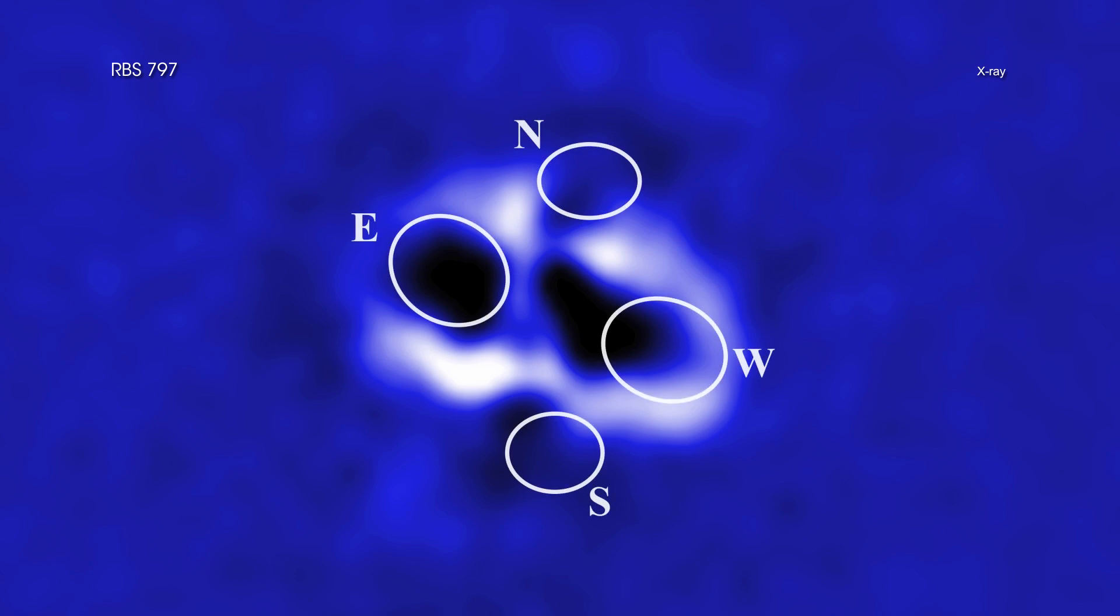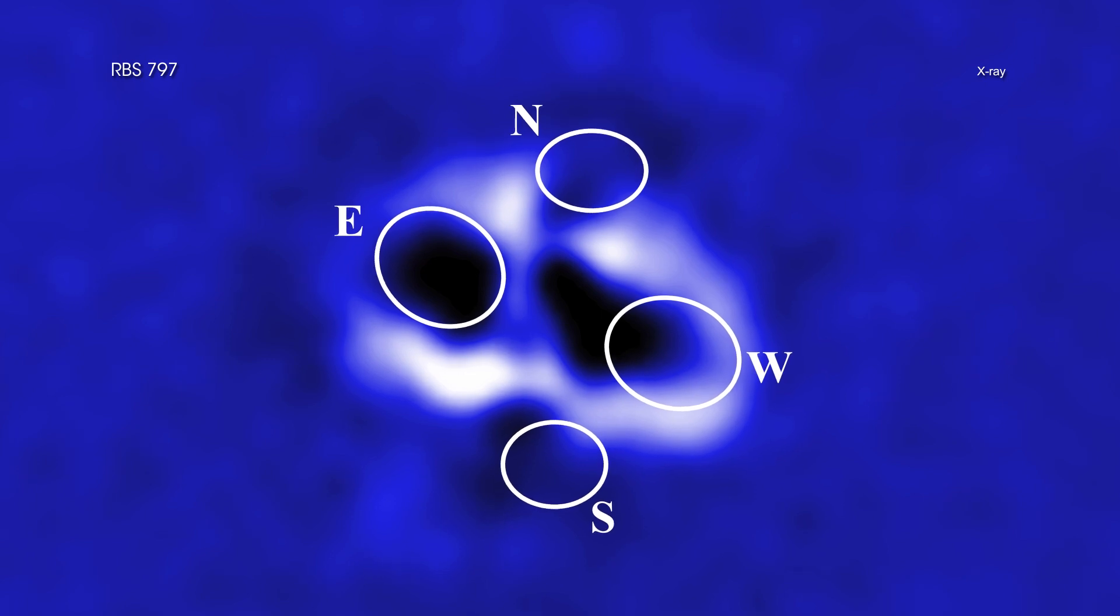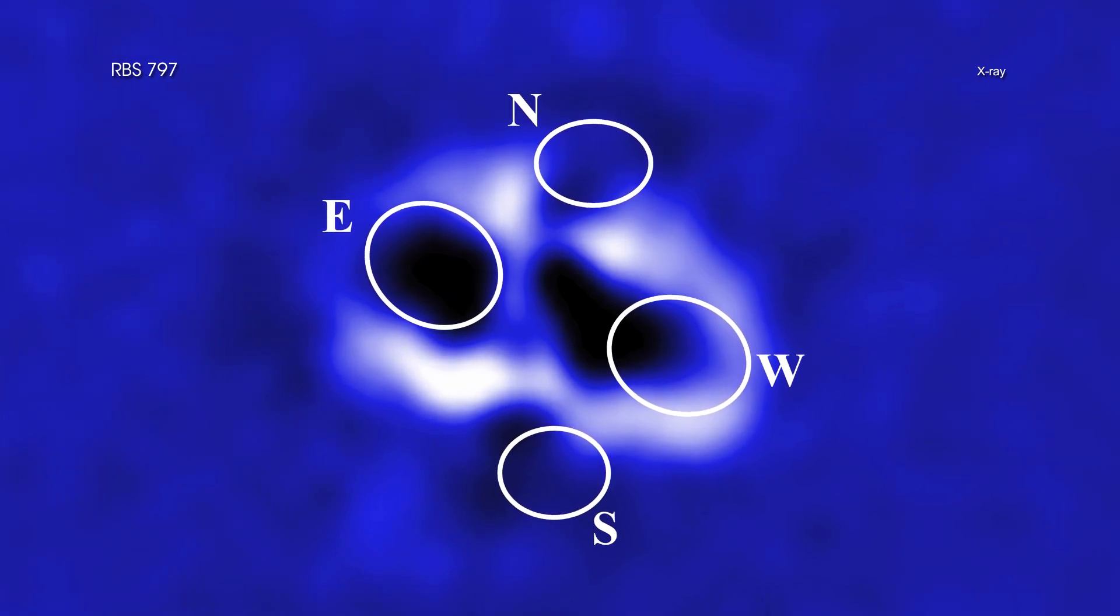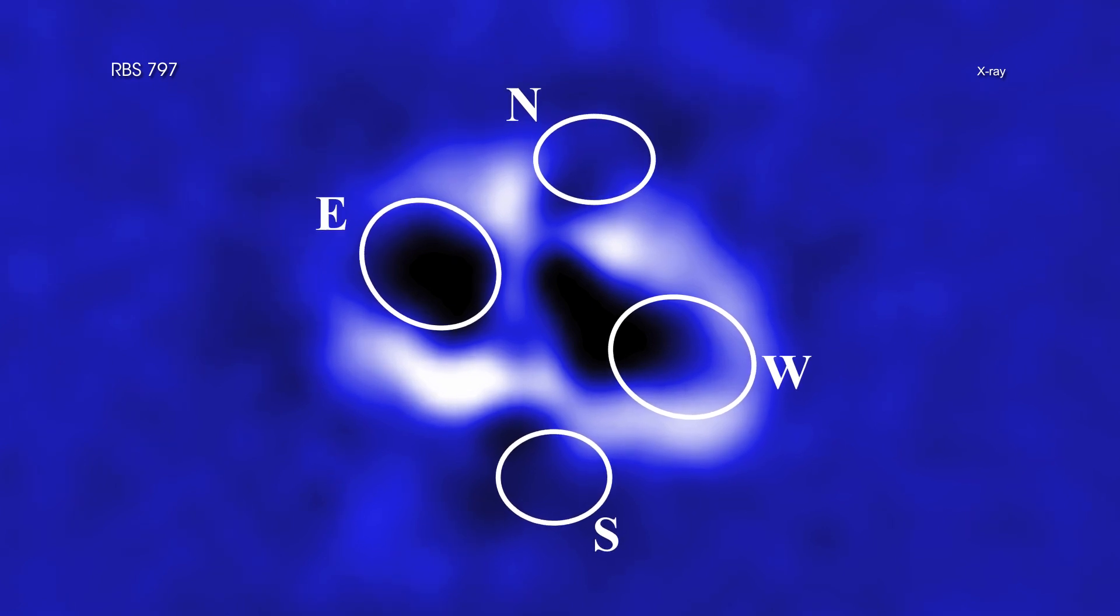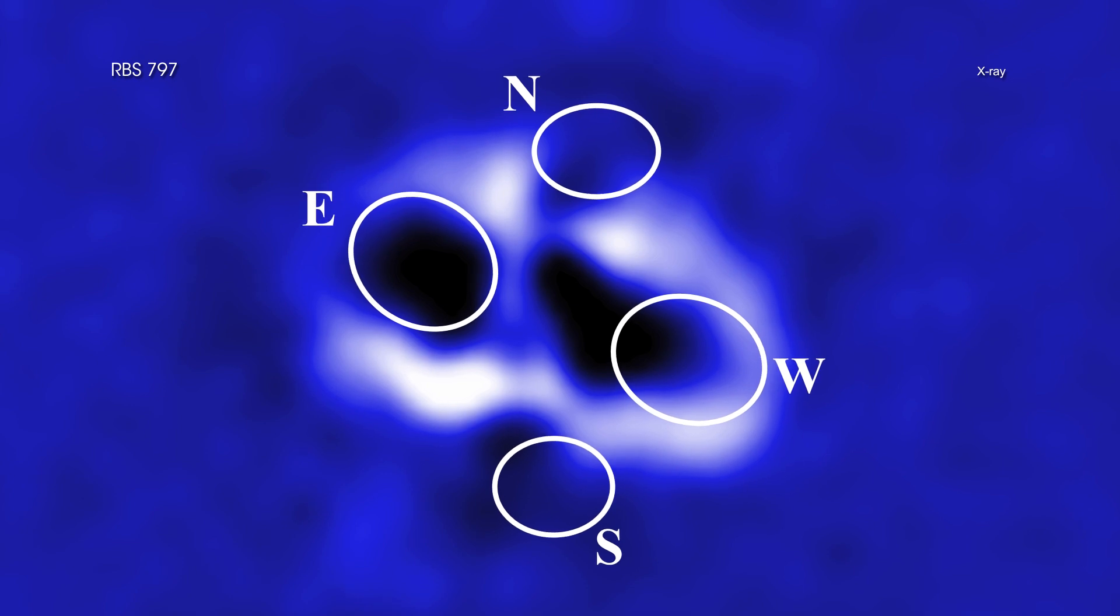The revelation in RBS 797 is that there are two sets of jets directed perpendicular to each other. Astronomers previously observed the pair of cavities in the east-west direction in RBS 797, but the pair in the north-south direction was only detected in a new, much longer Chandra observation. The deeper image uses almost five days of Chandra observing time, compared to about 14 hours for the original observation.